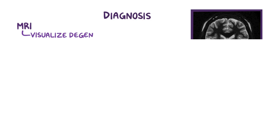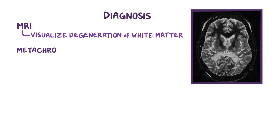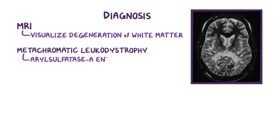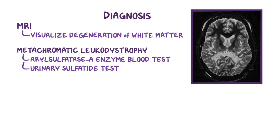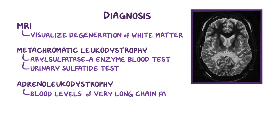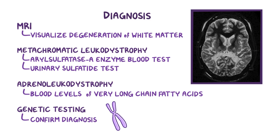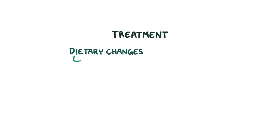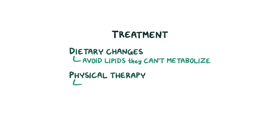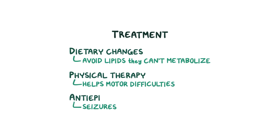Diagnosis of leukodystrophies is done with an MRI that can help visualize degeneration of white matter. For metachromatic leukodystrophy, an aryl sulfatase A enzyme blood test in conjunction with a urinary sulfatide test can be done. In adrenoleukodystrophy, blood levels of very long-chain fatty acids can be obtained. And finally, genetic testing can help confirm the diagnosis. Treatment starts with dietary changes to ensure that individuals avoid lipids that they can't metabolize. Physical therapy might be helpful for motor difficulties, and symptoms like seizures can be managed with antiepileptic medications.